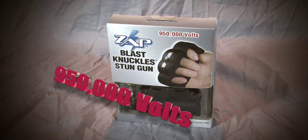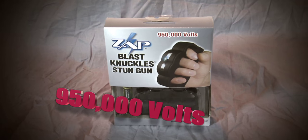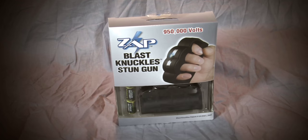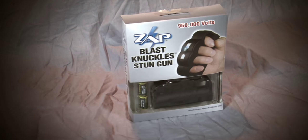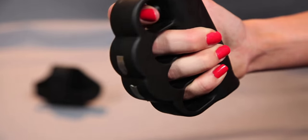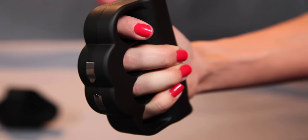The Zat Blast Knuckles offer a powerful 950,000 volts of personal protection in a small, concealable size, and feature a comfortable rubber coating that provides a secure, non-slip grip.